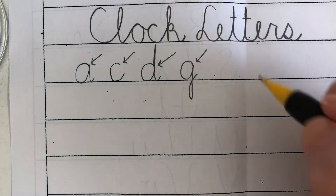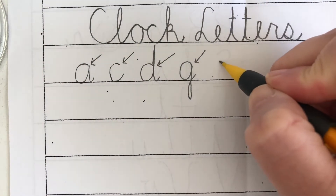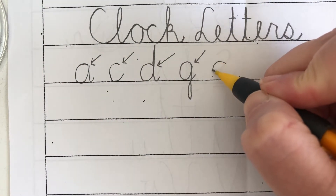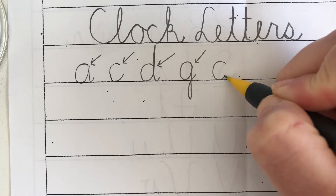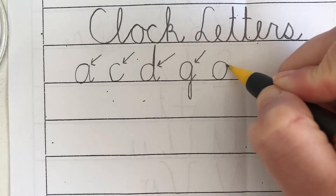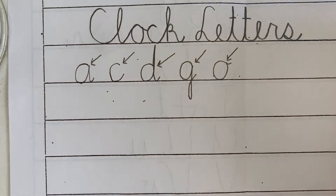O — up and around the clock face, back down to the baseline, up to two, finishing with a dip. Two on the clock.